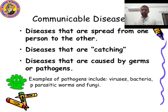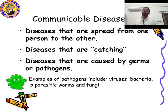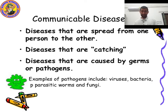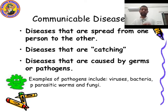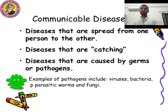Chickenpox was discovered by Edward Jenner. So, what is the meaning of communicable disease? A communicable disease is a disease that can spread from one person to another person — from an unhealthy person to a healthy person. It is called a communicable disease.